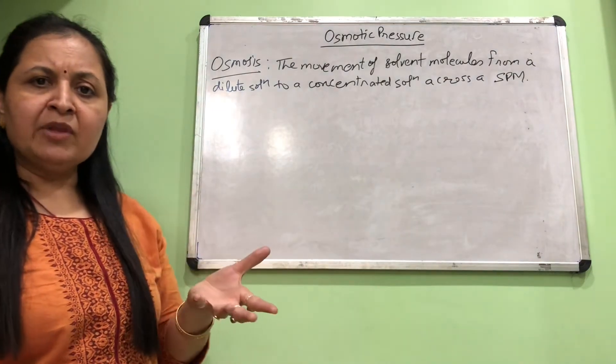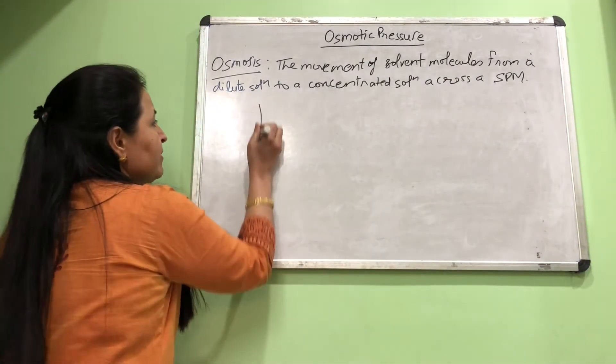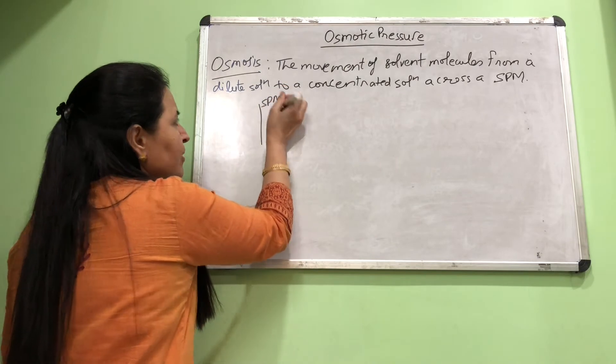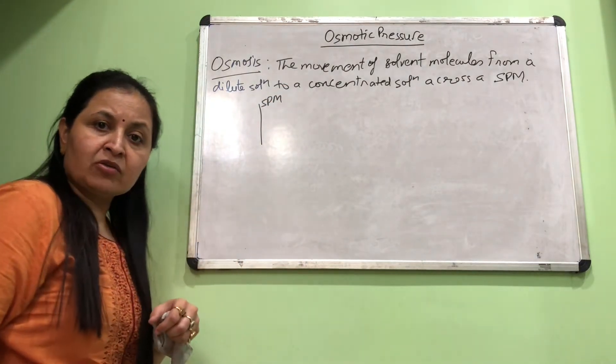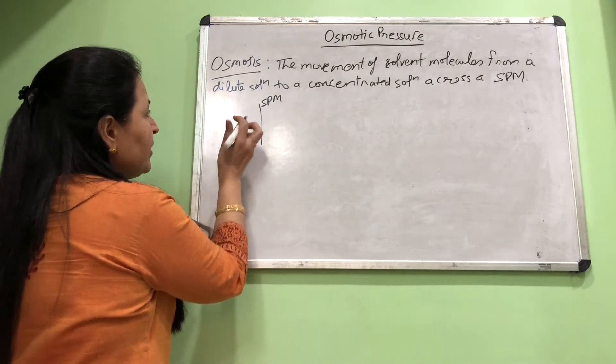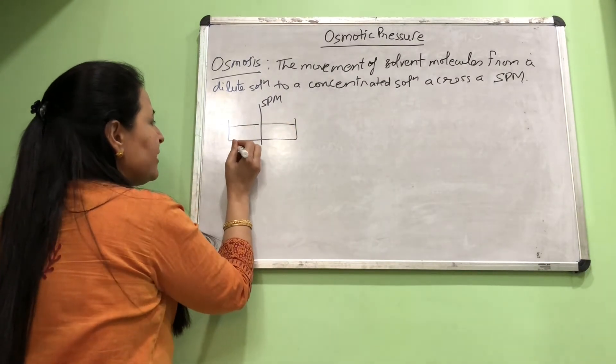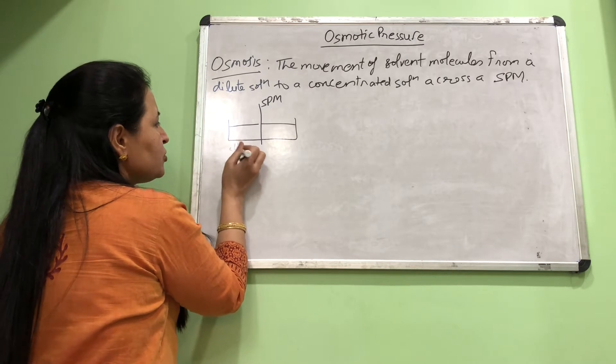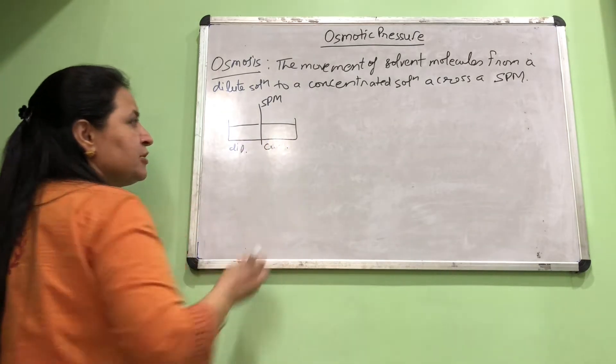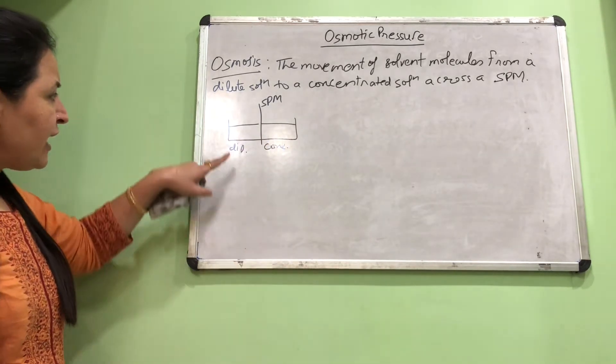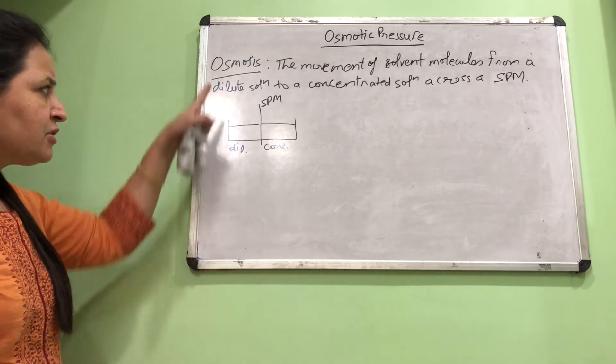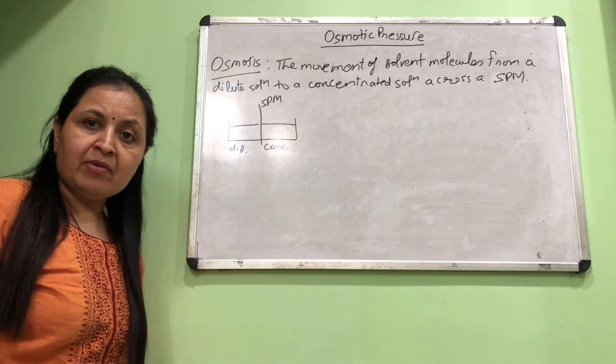Simply put, on one side we have a semi-permeable membrane in between. This is like a cell membrane. On both sides of this semi-permeable membrane, two solutions are present - both are salt solutions. Suppose this is a dilute solution and this is a concentrated solution.